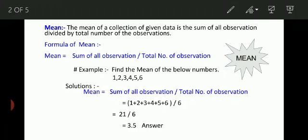Example, find the mean of the numbers below: 1, 2, 3, 4, 5, 6. You have to find the mean of these numbers. We know that mean equals the sum of all observations upon the total number of observations. Sum of observation means sum of all these numbers: 1 plus 2 plus 3 plus 4 plus 5 plus 6. Here the total number of observations is 6.